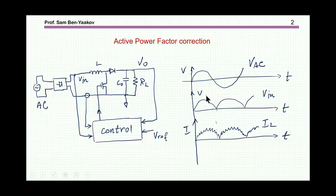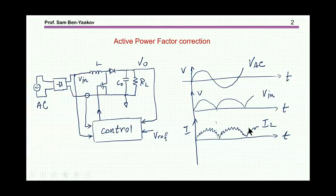Typically the waveform would look like this: this is the AC line, this is the rectified AC here, and then we have the inductor current, which will have a low frequency component — the line frequency — plus the ripple superimposed on the inductor current.